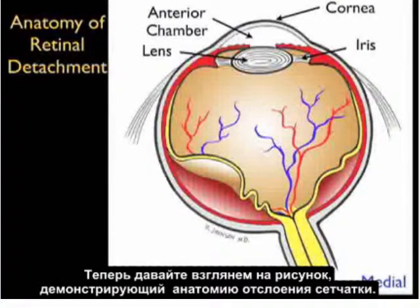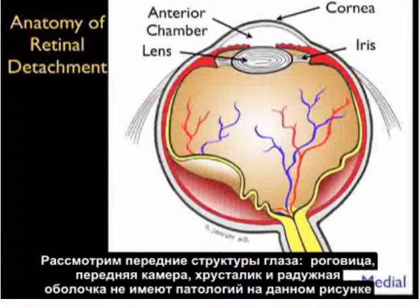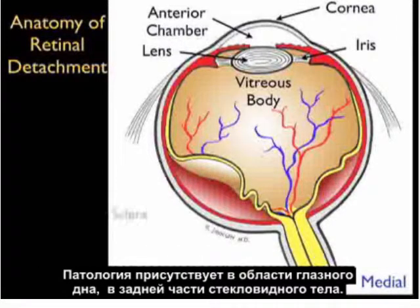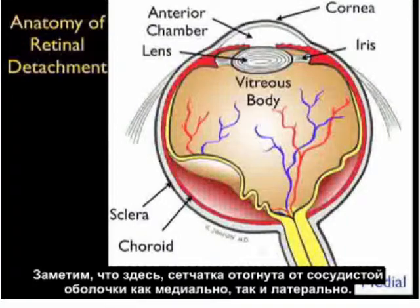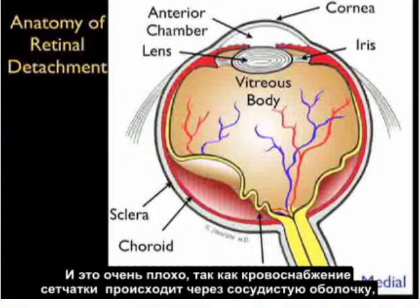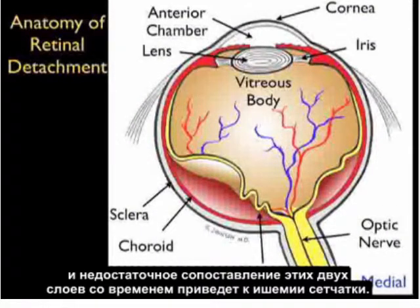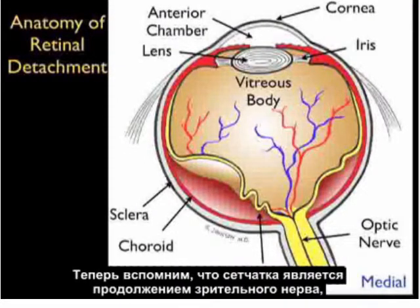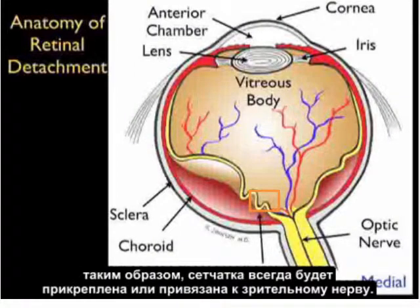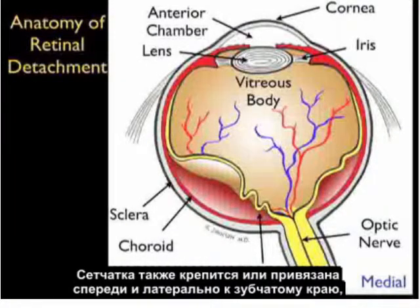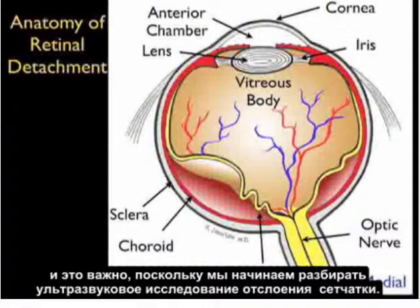Now let's look at an illustration showing the anatomy of a retinal detachment. The anterior structures — the cornea, anterior chamber, lens, and iris — are all normal. The pathology exists in the posterior aspect of the eye, where the retina has buckled away from the choroid, both medially and laterally. This is serious because the blood supply to the retina exists through the choroid, and loss of opposition between these two layers will cause ischemia of the retina over time. The retina is always tethered at the optic nerve and also attached anterior-laterally at the ora serrata.